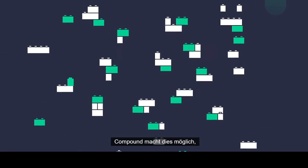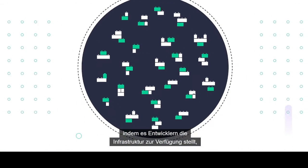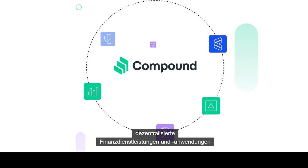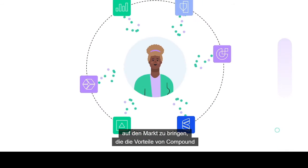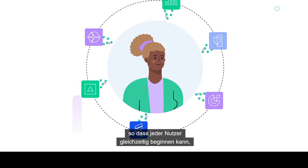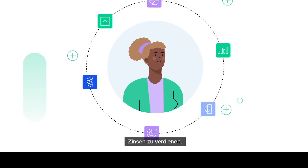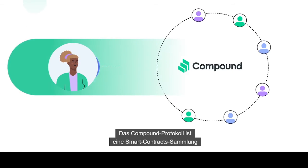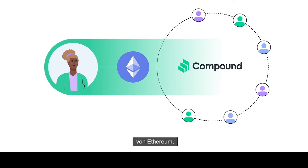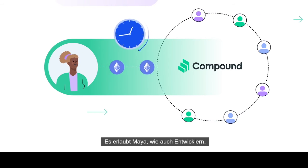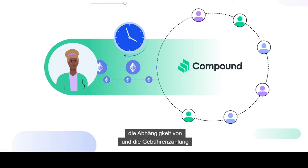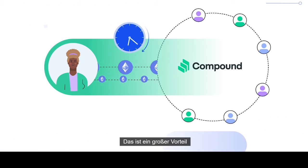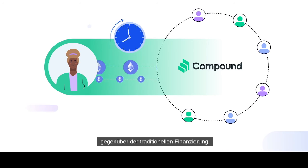Compound makes this possible by providing the infrastructure for developers to launch future-proof decentralized financial services and applications that can pass down Compound's benefits to their users, enabling every user to simultaneously begin earning interest. The Compound protocol is a collection of Ethereum smart contracts, meaning it's both decentralized and completely autonomous. It allows Maya as well as developers using Compound to stop relying on and paying fees to third parties, giving it a big advantage over traditional finance.